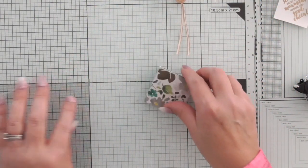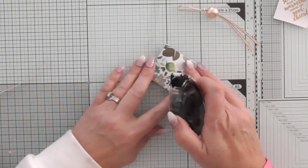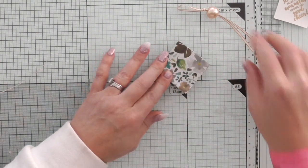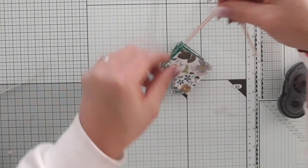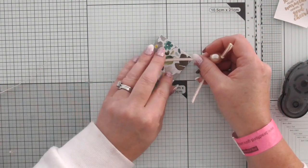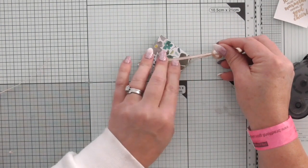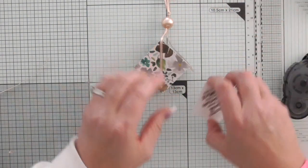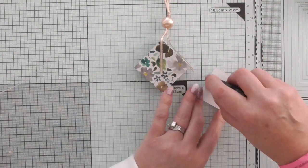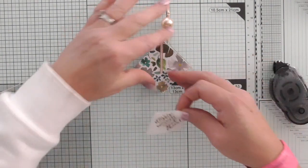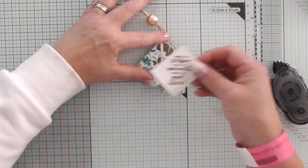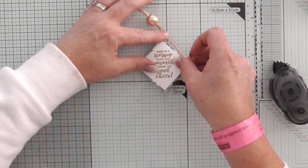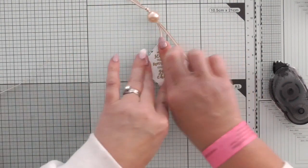So now what we're going to do very simply, we're going to put a line of adhesive down the center and we are going to attach our ribbon like so, leaving a small gap. And then we're going to attach our sentiment over the top of that, trying to get it on straight. That looks really pretty.